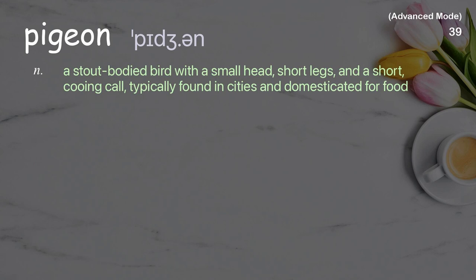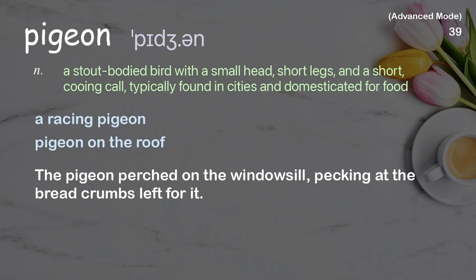Pigeon. A stout-bodied bird with a small head, short legs, and a short, cooing call, typically found in cities and domesticated for food. Examples: a racing pigeon, pigeon on the roof. The pigeon perched on the windowsill, pecking at the bread crumbs left for it.